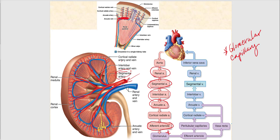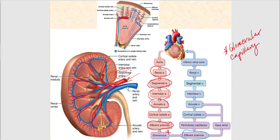Then blood drains into the efferent arteriole. The efferent arteriole drains blood into the peritubular capillaries, and it also may drain blood into the vasa recta — and I say may because this is not always the case, as we'll see when we discuss the two different types of nephrons. So from the efferent arteriole, blood drains into the peritubular capillaries and/or the vasa recta.